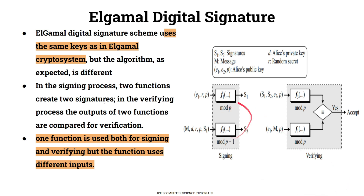This is the signing process — the very main process. We use the signing process with functions F1 and F2. The signature has two components: S1 and S2. We also use the verification process with functions F3 and F1. These are the P functions. F2 is calculated mod P-1.